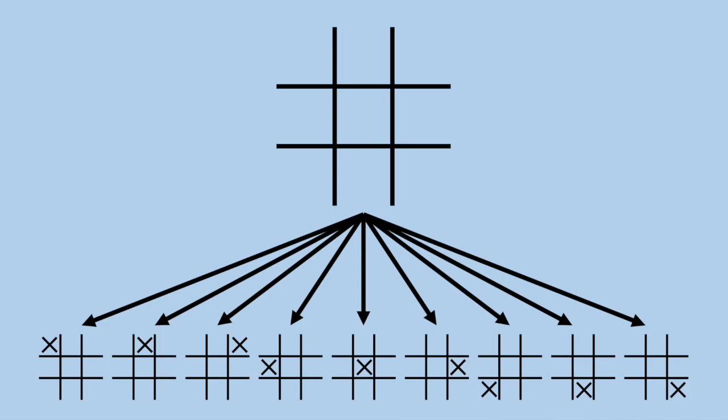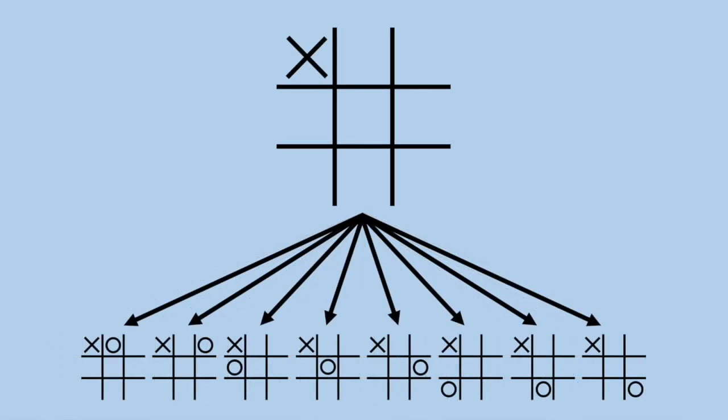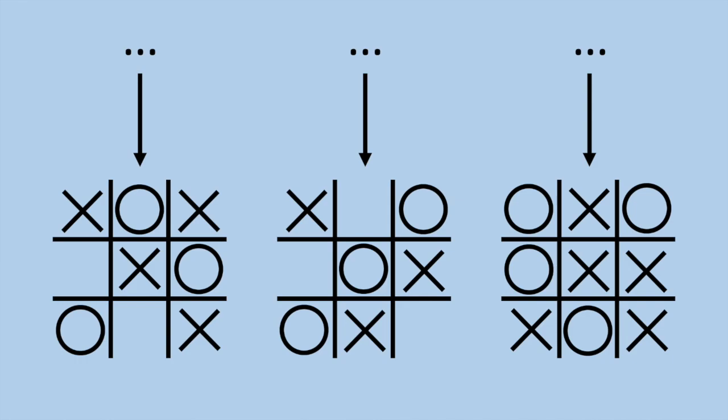The branching complexity actually decreases with each layer. If X goes in the corner, O only has eight places to go instead of nine, then seven, six, five, as the number of spaces left decreases by one. This continues down the tree until you reach an end node, and there are really only three ways the game can end: X winning, O winning, or a draw. When X or O wins, you don't need to explore the remaining spaces — the branch just ends. The only paths that go through all nine layers are those where all spaces get filled up, resulting in a draw.